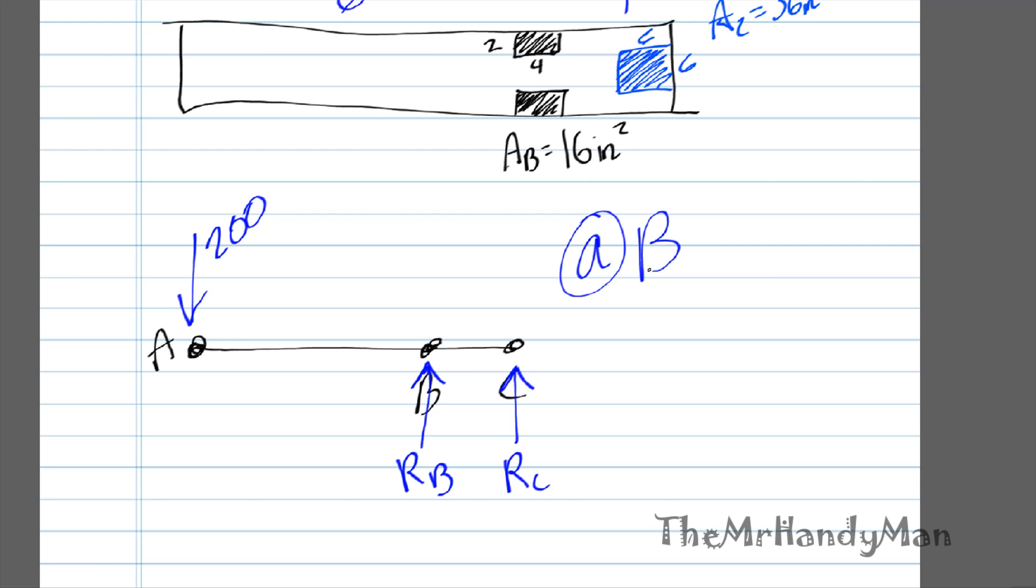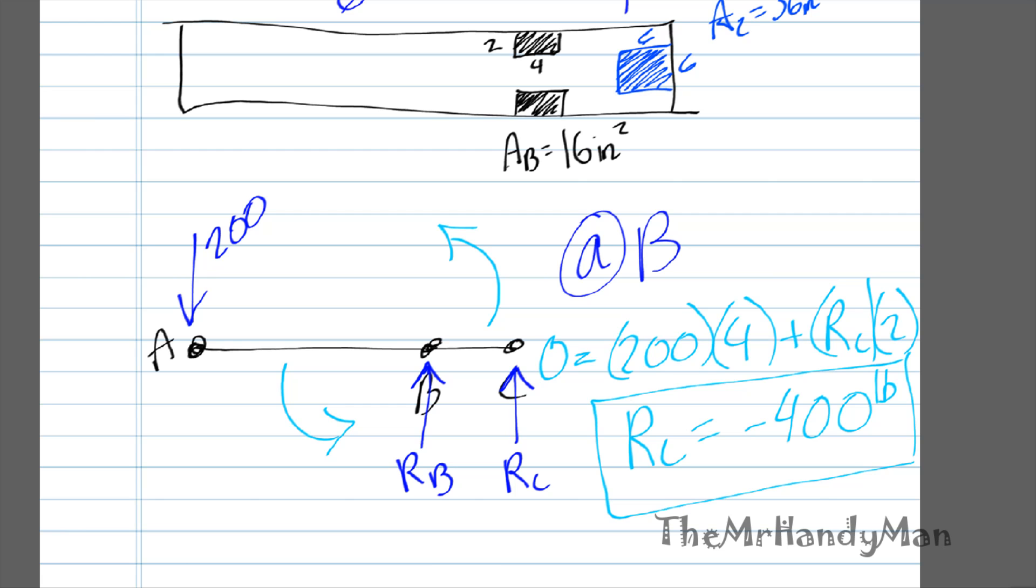We pick a point and we have to make sure that the moment is equal to zero at that point, or the sum of all moments equal to zero at that point, because we know the object is not rotating. I'm just going to consider at B. To calculate it out, you have 200 four feet away, plus you have your RC and that's two feet away, and we know that this whole thing equals zero. To calculate it out, we know that RC is actually going to equal negative 400 pounds.